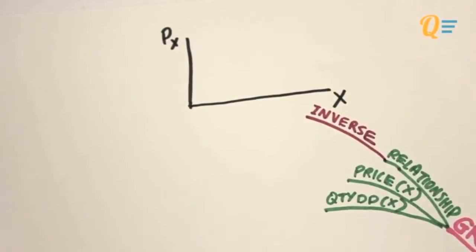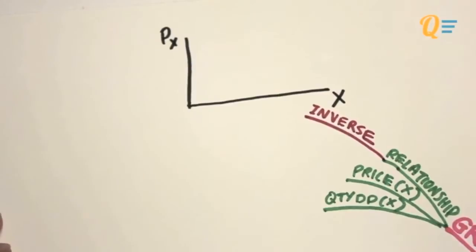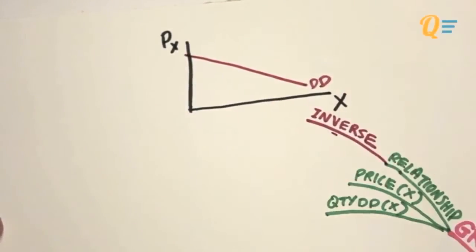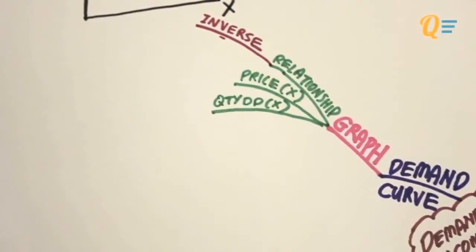So if you were to plot the demand curve on a price to quantity graph, what you'll see is a downward demand curve. And this reflects the inverse relationship between price and quantity. From here, we are going to learn how to derive the demand curve using two methods.